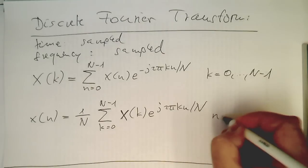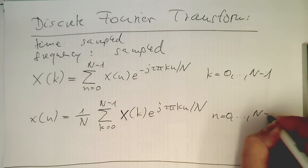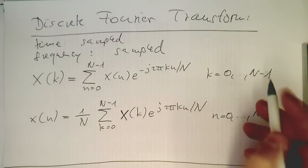And so again, our samples running from 0 to N minus 1. So this is a discrete Fourier transform.